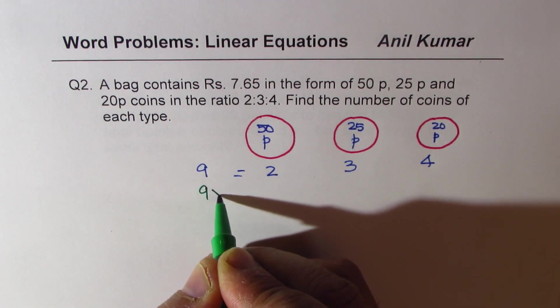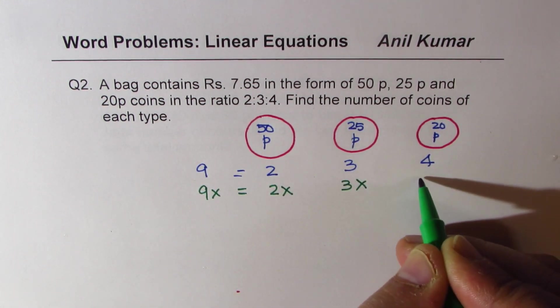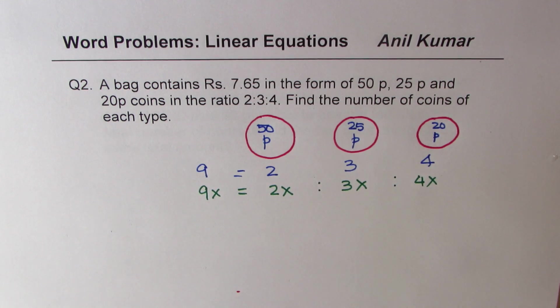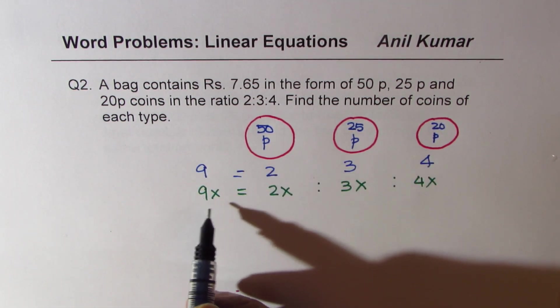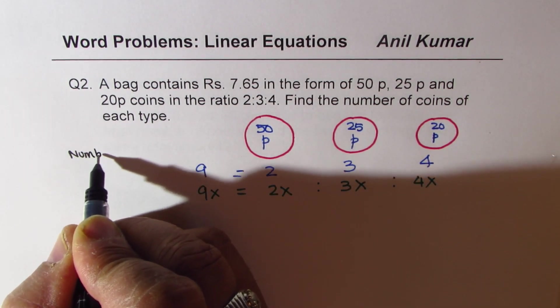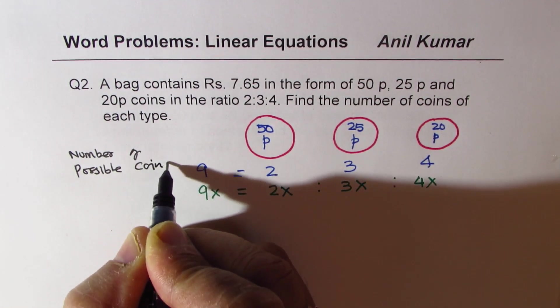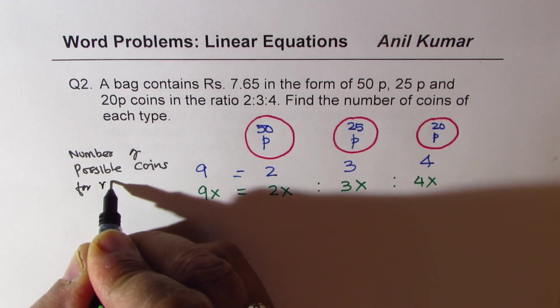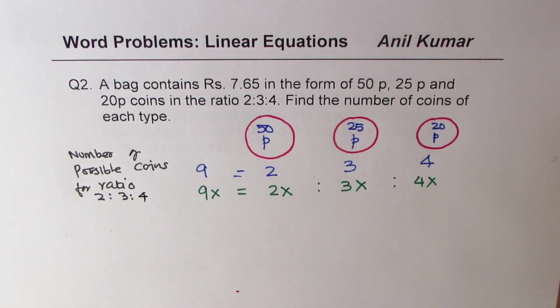So if we have 9 times x, then this will become 2 times x, this will be 3 times x, and this will be 4 times x, to maintain the same ratio, which is 2:3:4. So I hope you got this concept. When we say coins in ratios, then that could be their numbers. So that is number of coins. We have written number of possible coins for ratio 2:3:4.